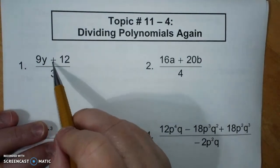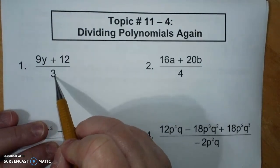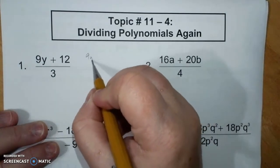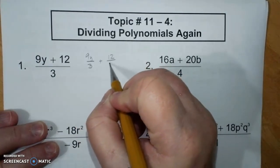This says 9y plus 12 divided by 3. You can actually write it as 9y divided by 3 plus 12 divided by 3.